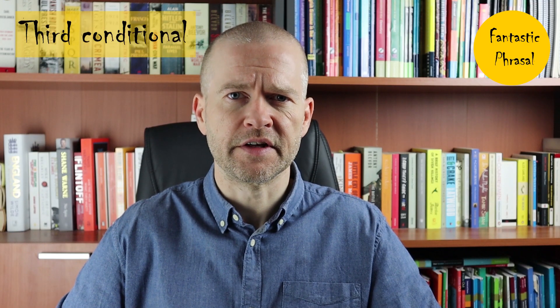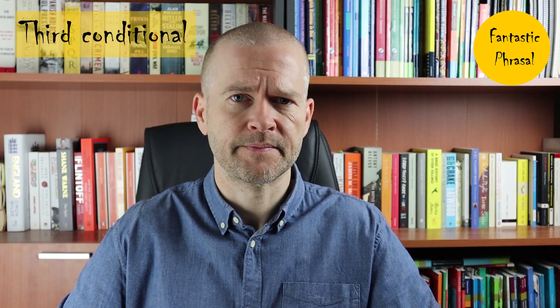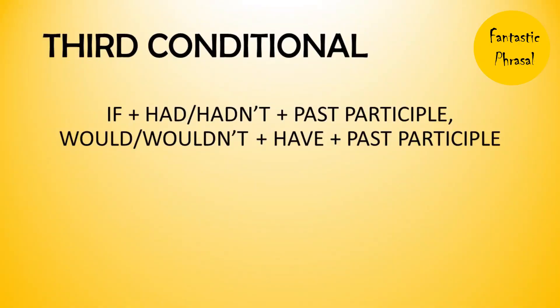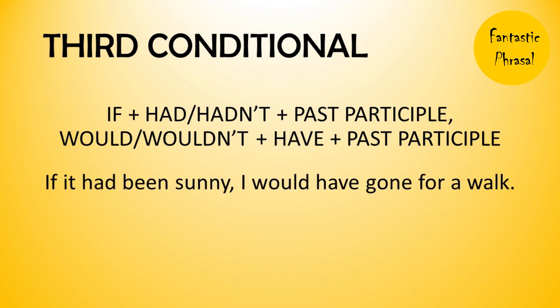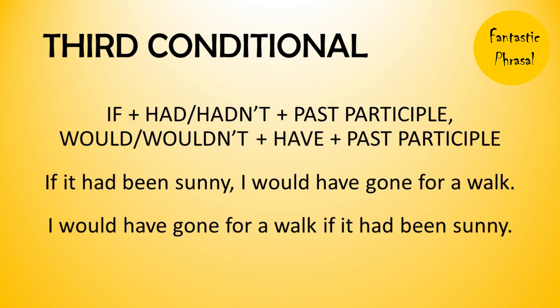You form the third conditional like this. In the conditional clause, we use 'if' with 'had' or 'hadn't' and the past participle of the verb. In the main clause, use 'would' or 'wouldn't' with 'have' and the past participle of the verb. For example: If it had been sunny, I would have gone for a walk. You can also put the main clause first, in which case you do not use a comma: I would have gone for a walk if it had been sunny.